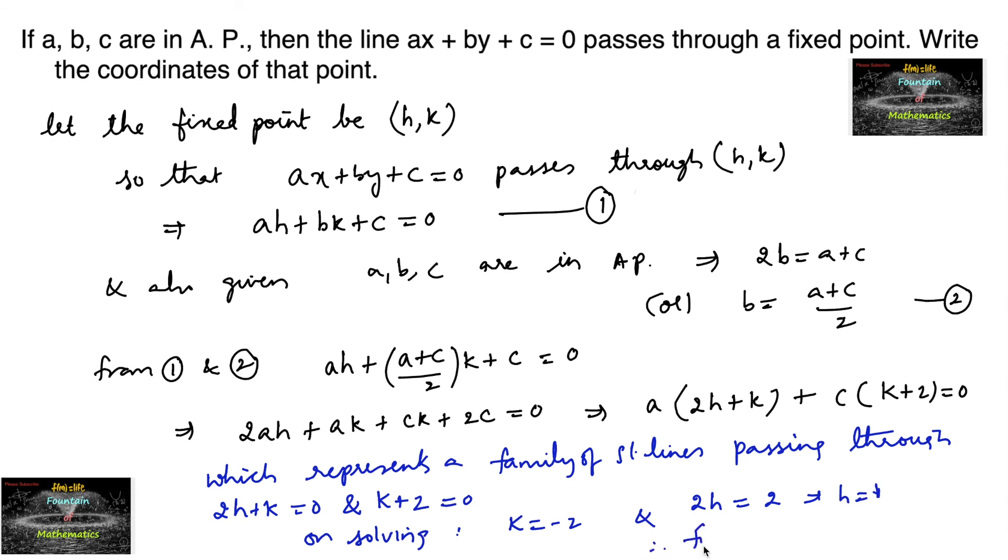Therefore the fixed point is 1 comma minus 2. So 1 comma minus 2 is the fixed point.